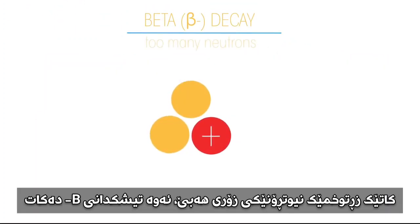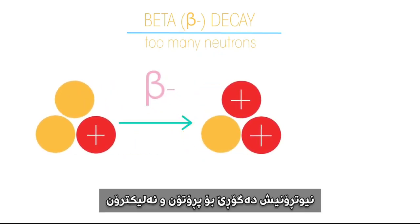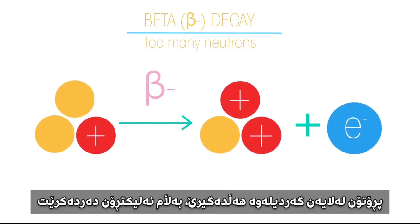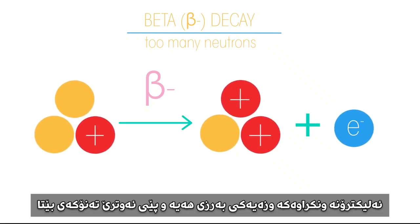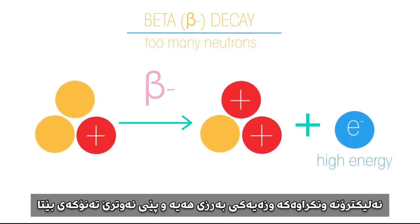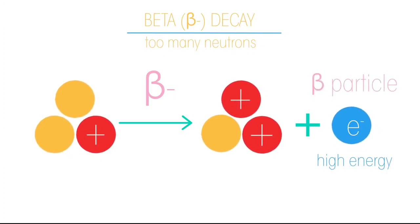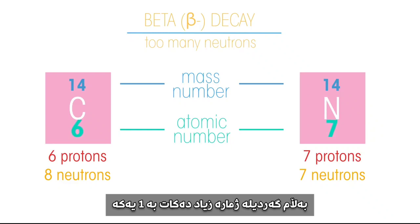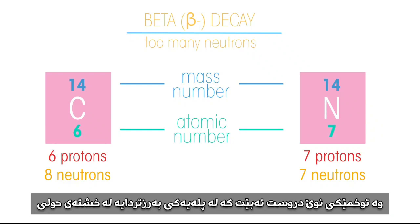When an isotope has too many neutrons it decays by beta minus decay. A neutron changes into a proton and an electron. The proton is retained by the atom while the electron is lost. The lost electron is high energy and is called a beta particle. By losing a neutron whilst gaining a proton, the mass number of the atom remains the same, but the atomic number increases by one. A new element is formed that is one place higher in the periodic table.